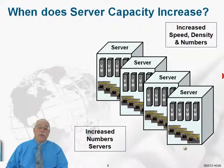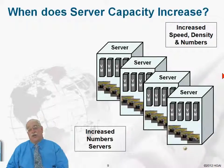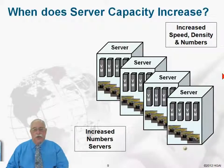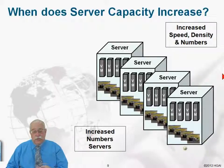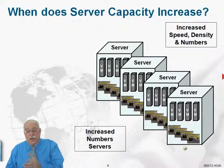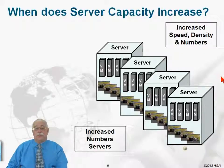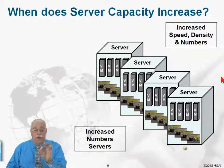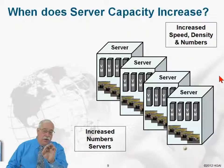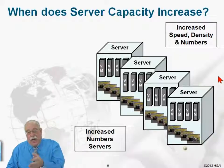We could also increase the number of servers. In a cluster of four servers, they're all communicating with one another. If one server fails within the cluster, another server can take over by moving those virtual machines to another server and by accessing the storage associated with the applications that used to run on server one — now failed — running on server two within that cluster.